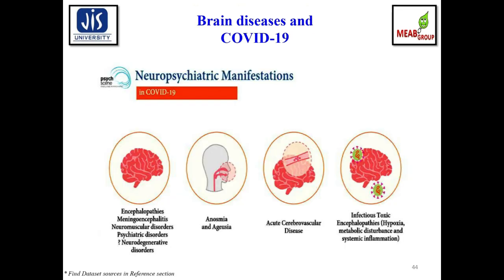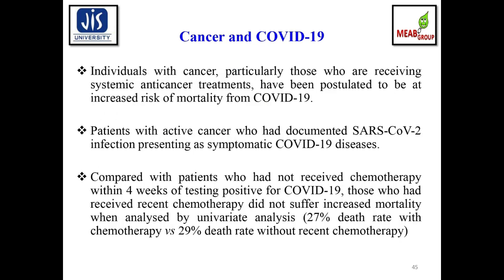There does not seem to be any association with the severity of COVID-19 respiratory symptoms. A pictorial presentation illustrates neuropsychiatric manifestations in COVID-19, including insomnia, acute cerebrovascular diseases, toxic encephalopathy, hypoxia, metabolic disturbances, and symptomatic inflammation in brain tissues.